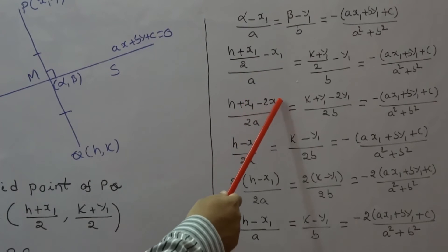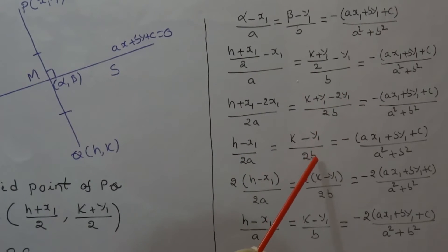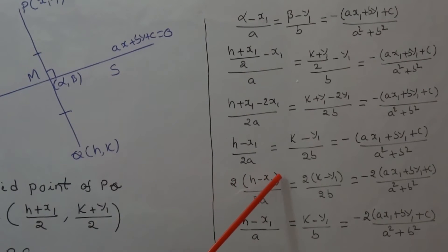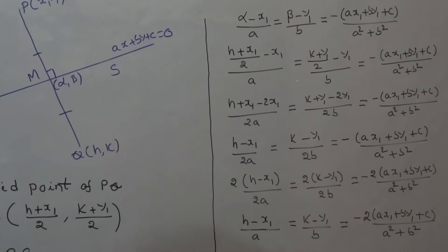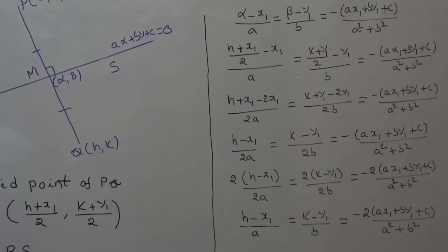So we get ((h + x1)/2 - x1)/a = ((k + y1)/2 - y1)/b = -(ax1 + by1 + c)/(a² + b²), which simplifies to (h - x1)/(2a) = (k - y1)/(2b) = -(ax1 + by1 + c)/(a² + b²). Now multiplying each side by 2, the 2s cancel and we get (h - x1)/a = (k - y1)/b = -2(ax1 + by1 + c)/(a² + b²).